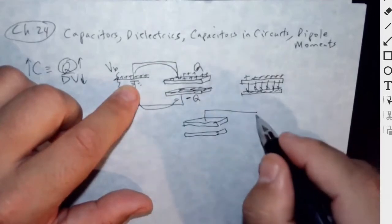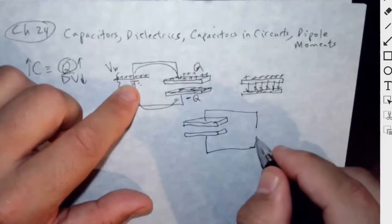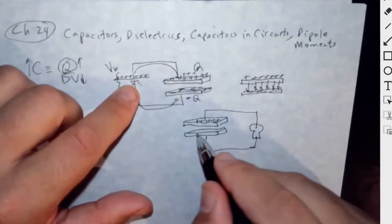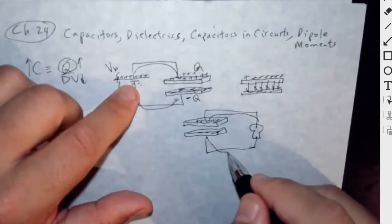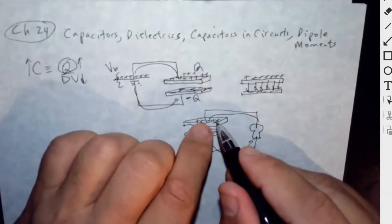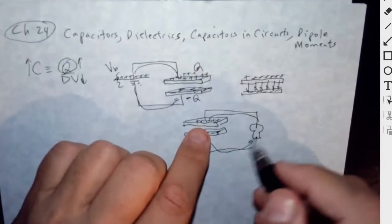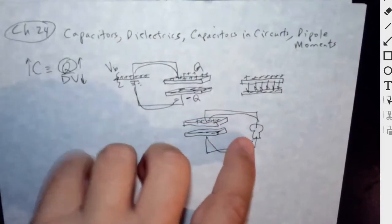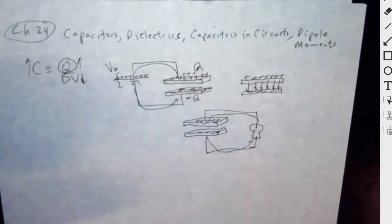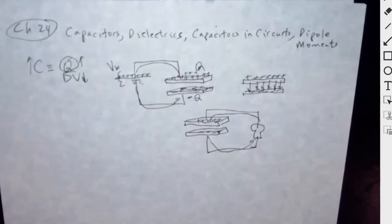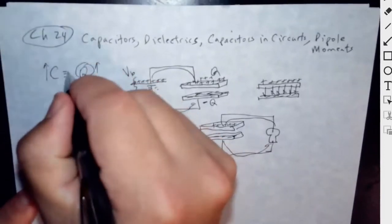The advantage of having a big capacitor is that if you disconnect it from the battery, you can use the capacitor as a temporary source of electrical energy. You can connect it across a light bulb, and the capacitor will discharge and make the light bulb light up for a while. The more charge it has, the more power it delivers and the brighter the light bulb. So the bigger the capacitor, the more charge it can store and the less voltage is needed to store that charge.